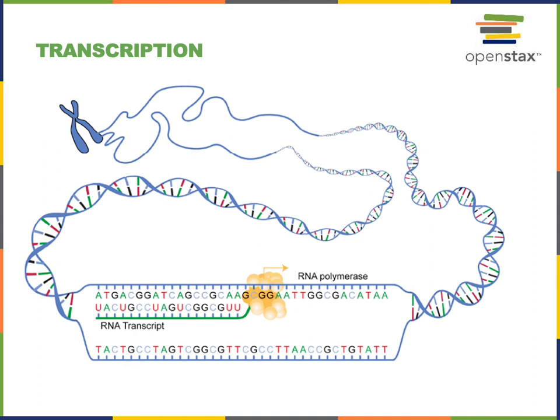This allows RNA polymerase to initiate and then elongate the growing RNA polymer. Like DNA polymerase, RNA polymerase will only add nucleotides onto the three prime end. RNA polymerase is able to initiate transcription without first having a primer. After elongation, the last step of transcription is termination, which will be triggered by a termination sequence at the end of the gene.